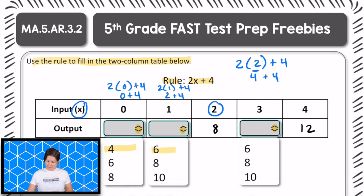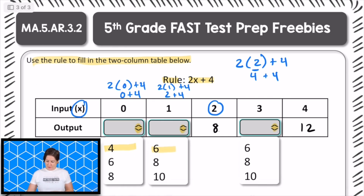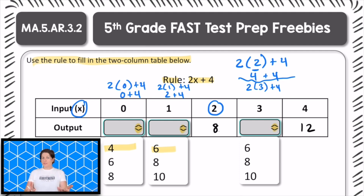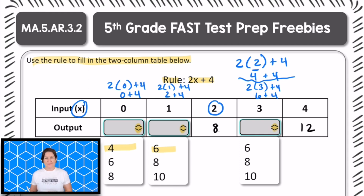And last but not least, we've got 2 with an input of 3, plus 4. 2 times 3 equals 6. And 6 plus 4 equals 10. So we would select 10 right there.